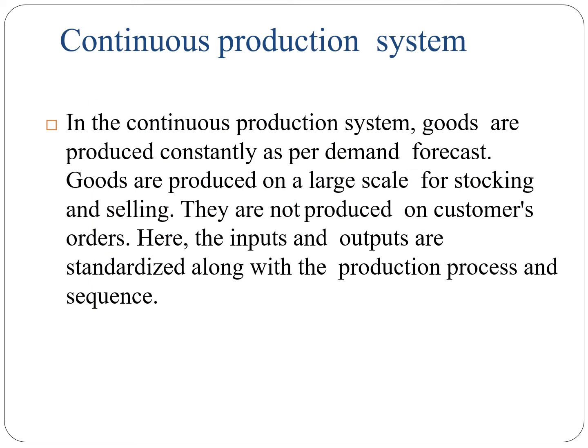The second production system is continuous production system. In the continuous production system, goods are produced constantly as per demand forecast. We are not concerned about customer orders or customer design. Goods are produced on a large scale and kept in a warehouse. After demand from the customer, they are sold in the market. They are not produced on customer orders. Here the inputs and outputs are standardized along with the production process and sequence.